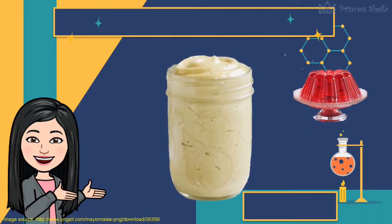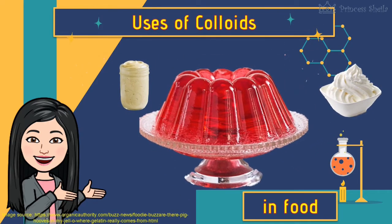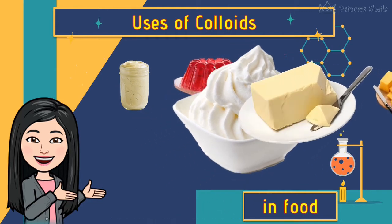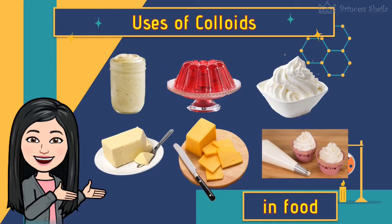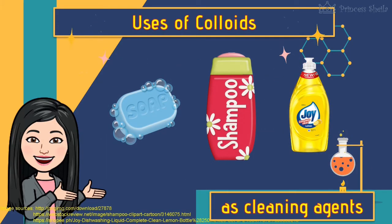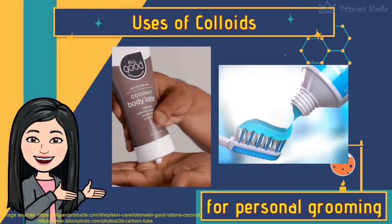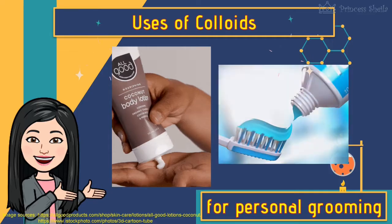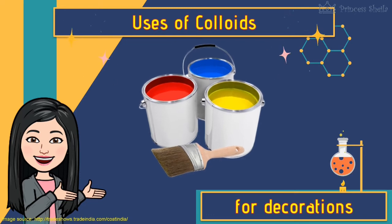Uses of colloids: mayonnaise, gelatin, whipped cream, butter, cheese, and icing are examples of colloids used for food or food preparation. Other colloids can also be used as cleaning agents like soap, shampoo, and detergent. Others are used for personal grooming like toothpaste and lotion. There are colloids for protective and decorative functions like paint.